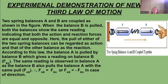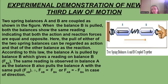We write F_AB equals minus F_BA because the forces are acting in opposite directions. The negative sign is used to represent the opposite direction of the forces.